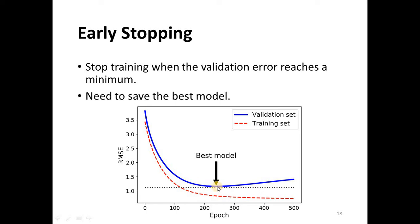For the validation set, the error decreases as training progresses until some point where it reaches a minimum — this is the best model. After this point, further training improves the error on the training set but there is overfitting and we don't get similar improvement on the validation set. We should stop training when the validation error reaches its minimum or starts to increase.